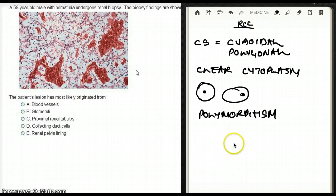What else are we going to see in renal cell carcinoma? The cells are going to be filled with lipids and carbs. Carbohydrates and lipids are going to fill the cell.